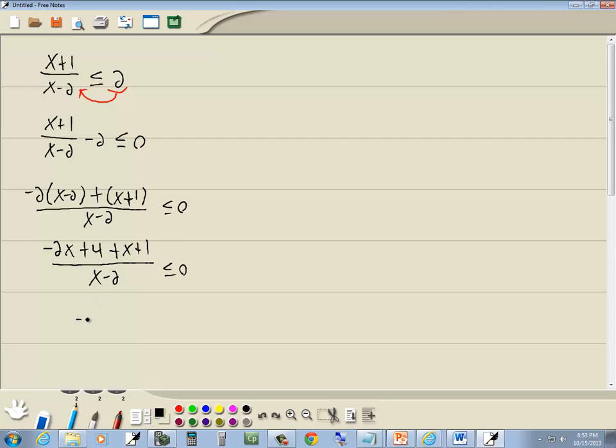Negative 2x plus x is negative x. 4 plus 1 is 5. Over x minus 2 is less than or equal to 0. And we got our single fraction.